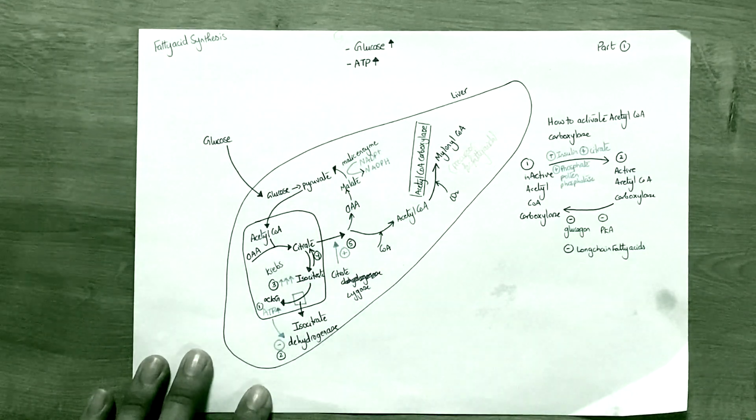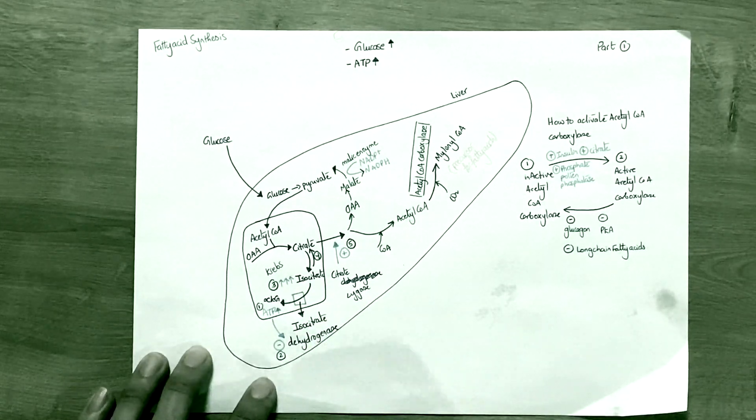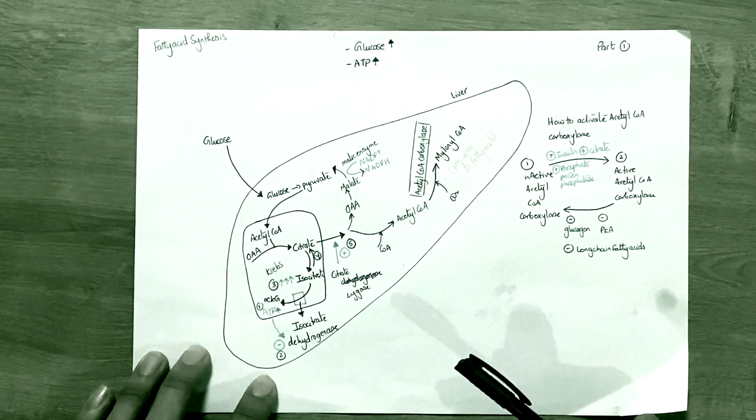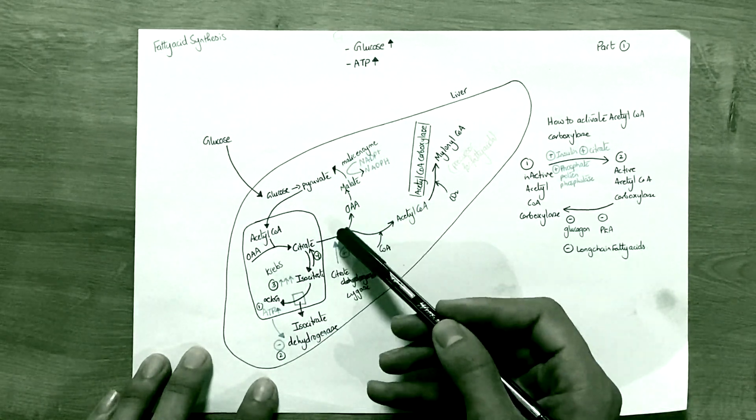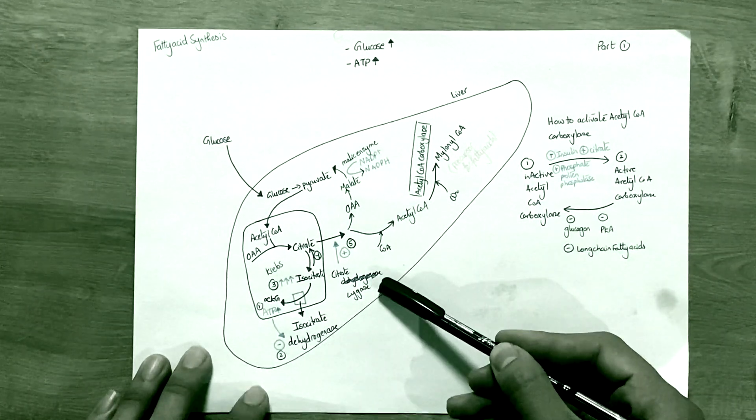When the concentration of citrate increases within the mitochondria, it triggers a signal to transport the citrate out of the mitochondria into the liver. Once citrate is out, it meets an enzyme called citrate ligase.